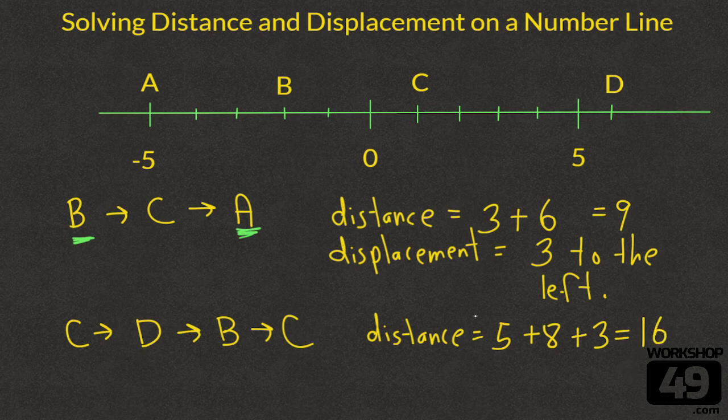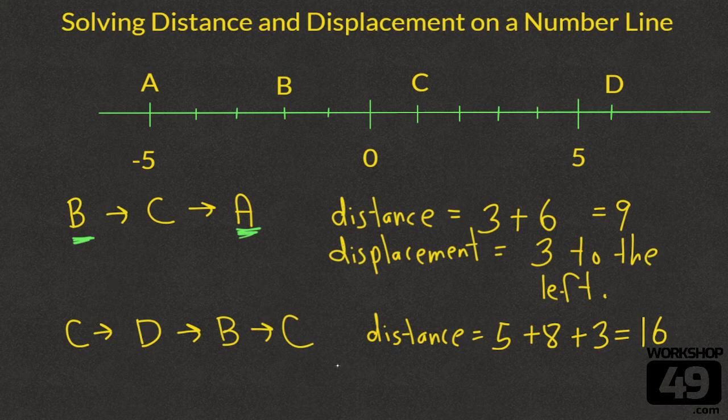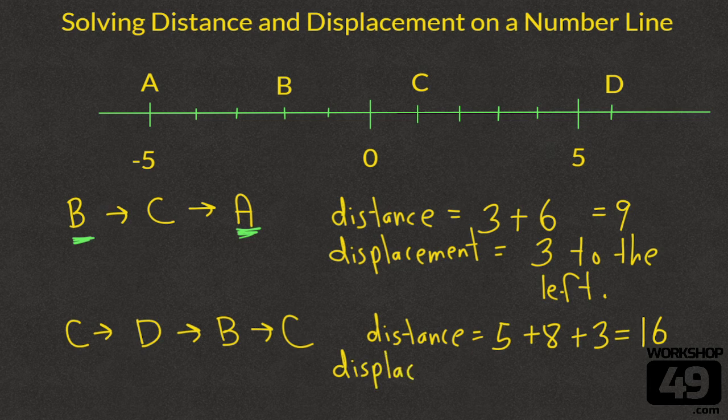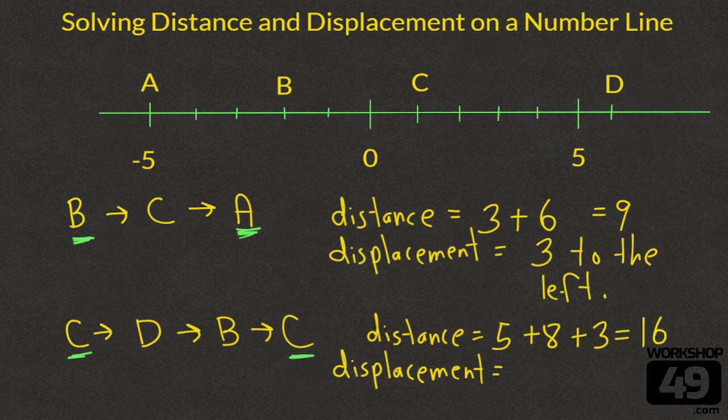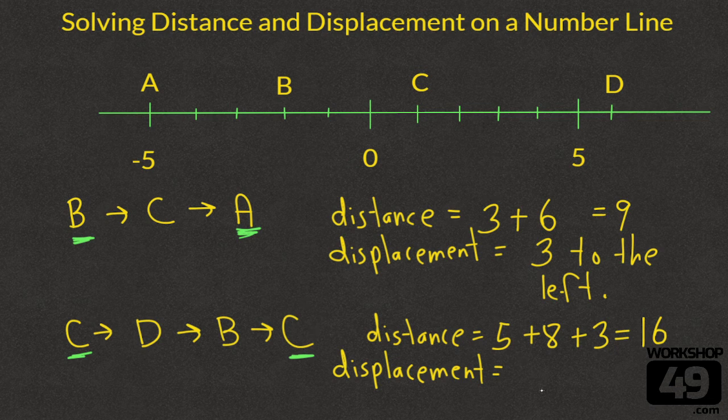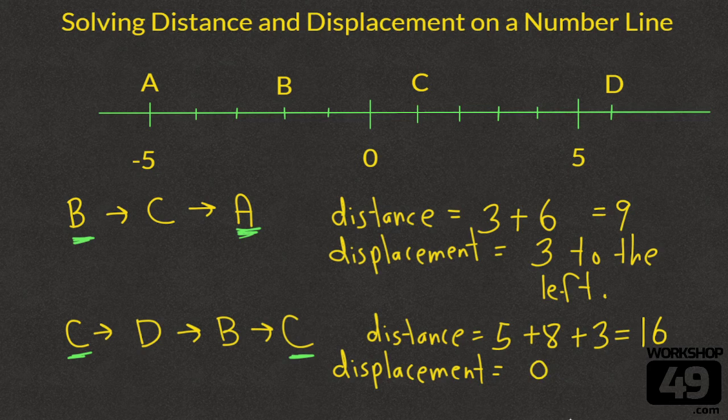That's how far we would have to walk to go from C to D to B to C. But what about our displacement in this case? Our displacement in this example only looks at the beginning and the end: C to C. Well, that's nowhere. We began and ended at the exact same place, so we can just say that the displacement is 0.